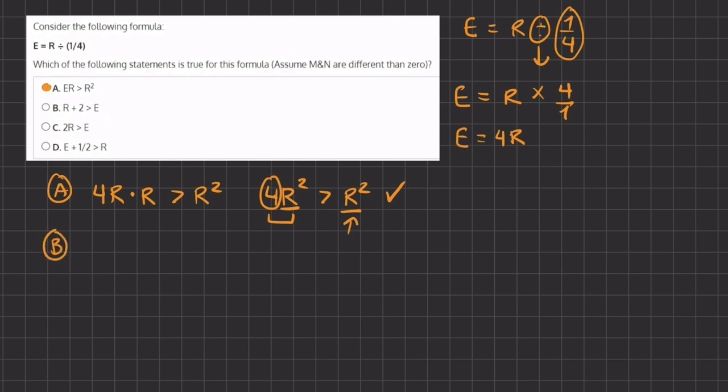Now let's take a look at why B, C, and D are incorrect. We have R plus 2 is greater than E, which is 4R. Now we can subtract R on both sides and we are left with 2 is greater than 3R. We can divide 3 on both sides to isolate R, so we have 2/3 is greater than R. But because R can be any value, it does not have to have a limitation of being less than 2/3, so therefore B is incorrect.